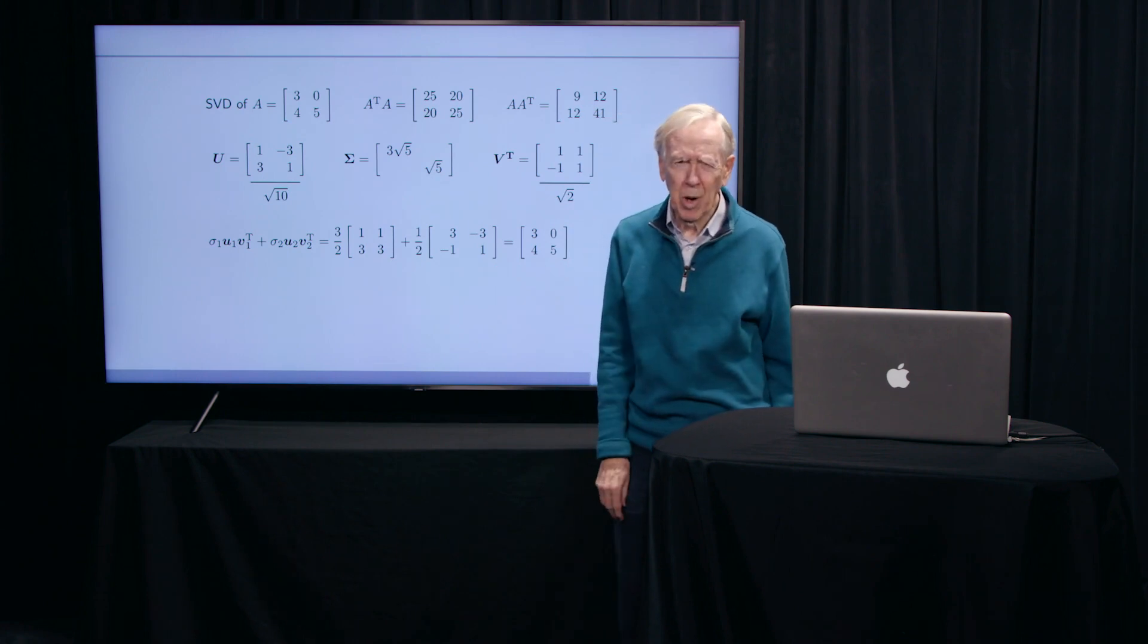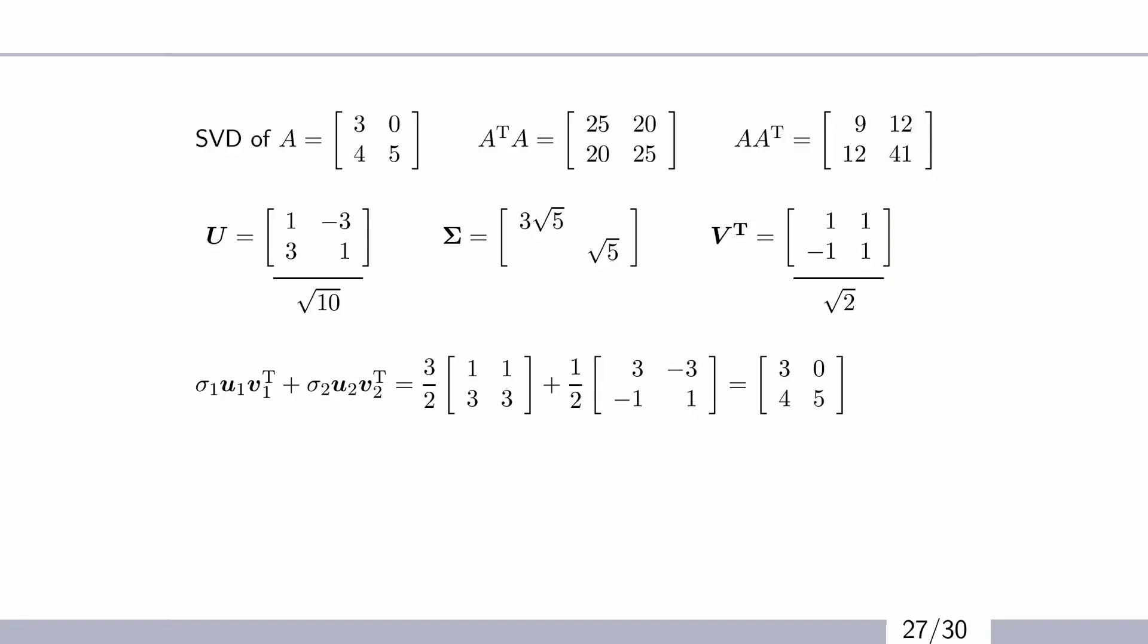And that's what data science wants. Data science wants to know what's important in the matrix. Well, what's important is sigma 1, the big guy. Sigma 2, you see, well, it was three times smaller, three halves versus one half.